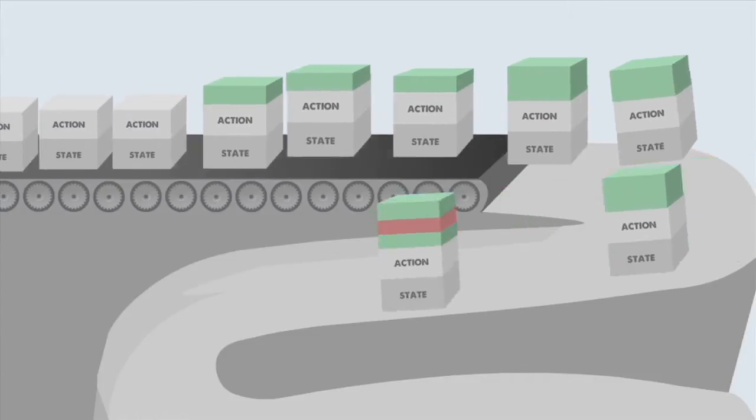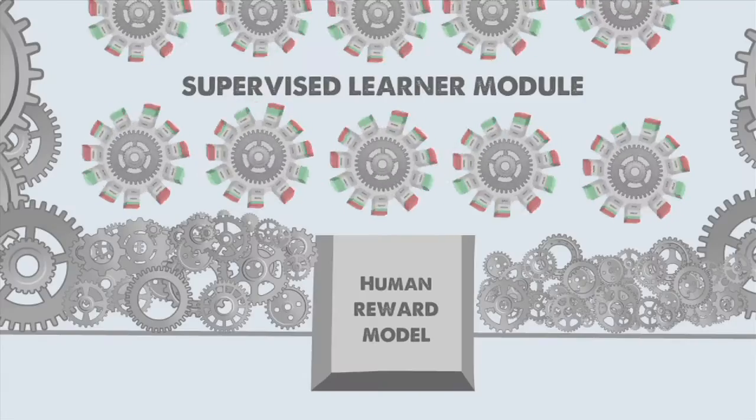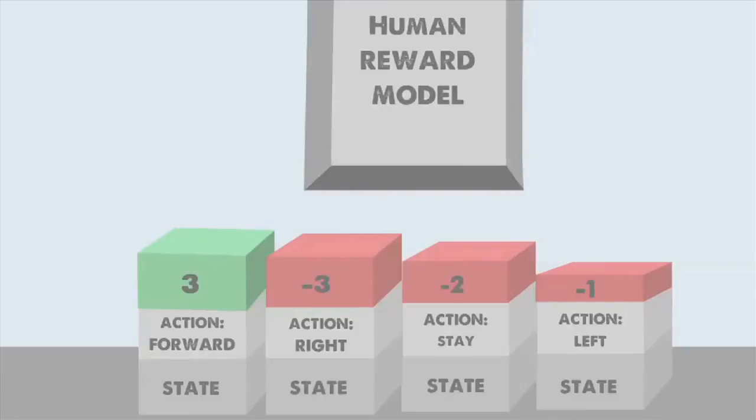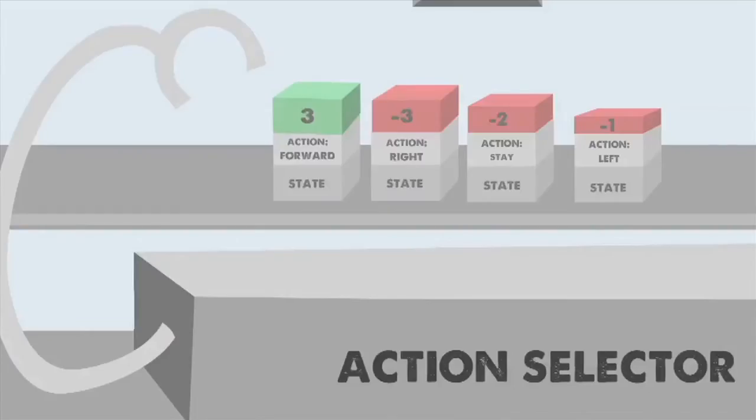As new learning samples arrive, the human reward model is updated. The action selector module uses the most recent model to predict how much reward will be given in the current task state and opts for the action it expects to elicit the greatest reward.